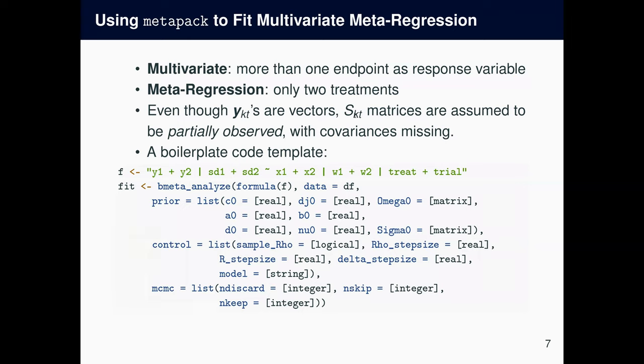Even though Y's are vectors, multivariate meta-regression assumes that S_kt matrices are partially observed and the covariances are missing. A boilerplate code template is as follows. We first define the formula, Y1 plus Y2, these are the endpoints, and the vertical bar that separates the two parts in the left-hand side. Corresponding standard deviations, tilde, the important divider, and the first right-hand side is the fixed effects covariates, and the second is the random effects covariates, and the last is the treatment indicators and trial indicators.